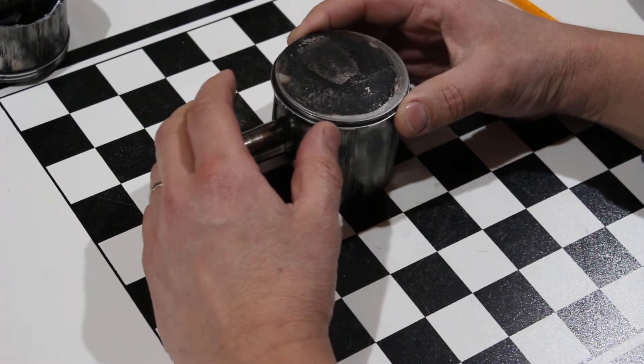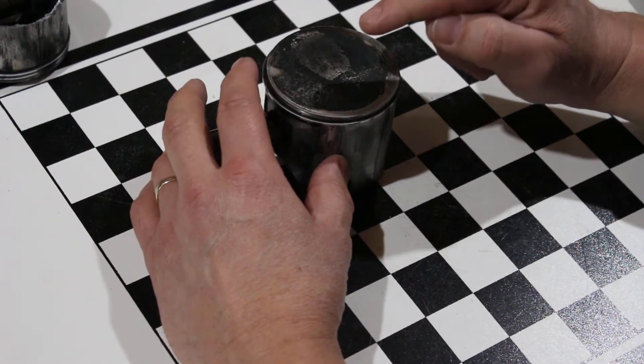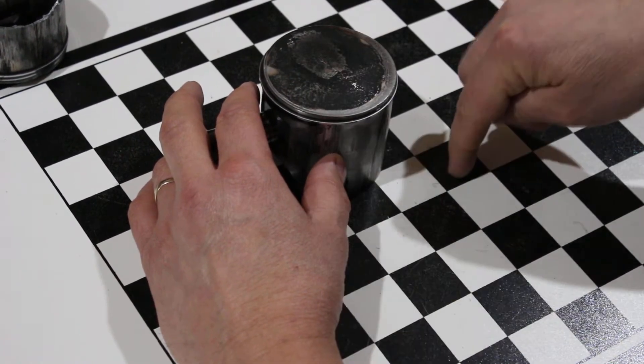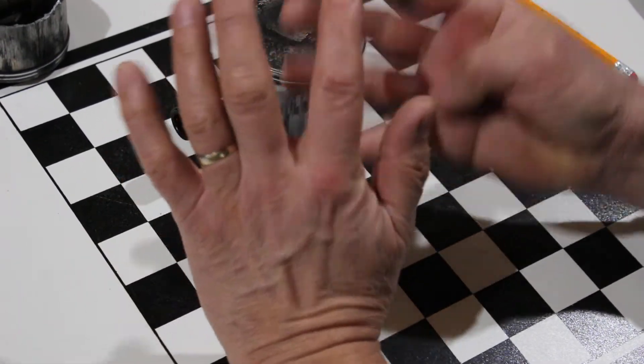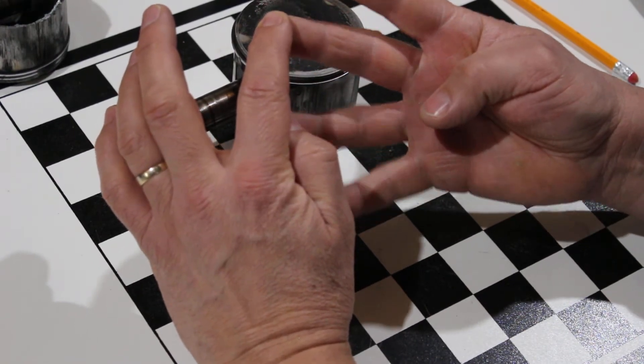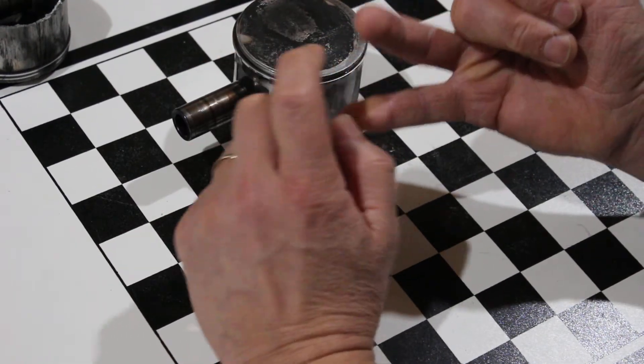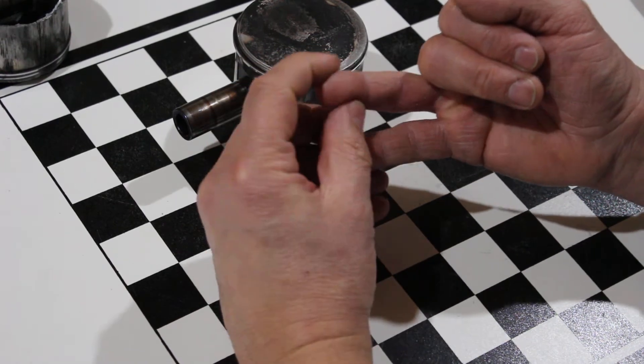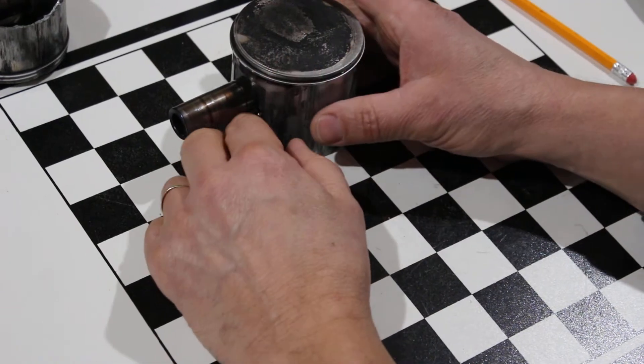Keep in mind that two-stroke engines have a power stroke every single time the piston moves down. A four-stroke engine has intake, compression, power, exhaust - you get the power stroke once every four strokes. With a two-stroke engine, your intake event, power compression event, power event, and exhaust event are all paired up into two strokes. So every other movement of the piston is a power stroke. Huge amounts of heat generated.